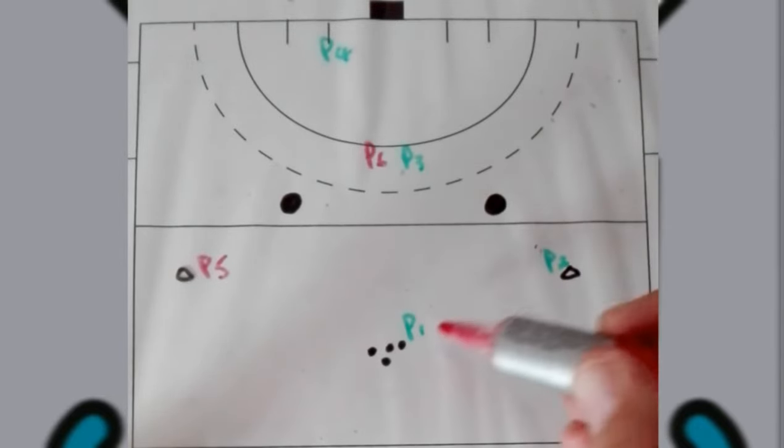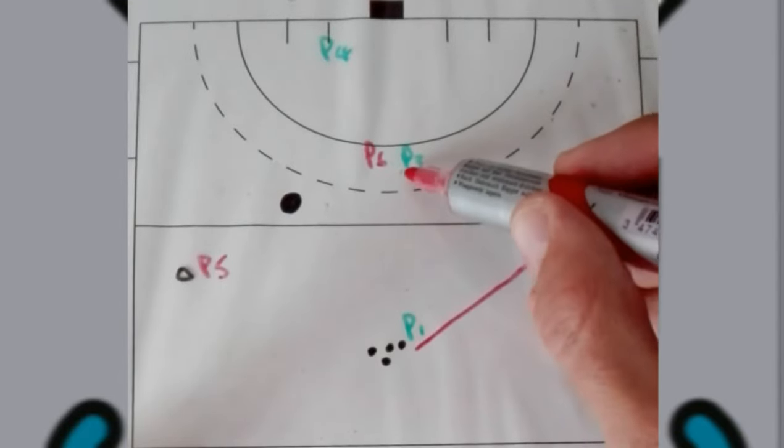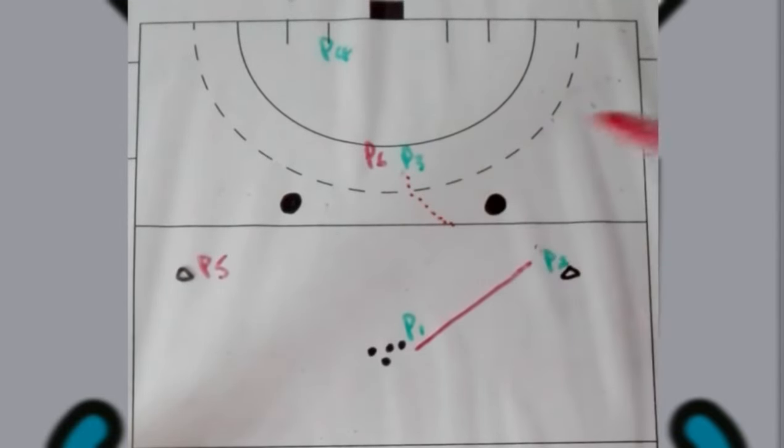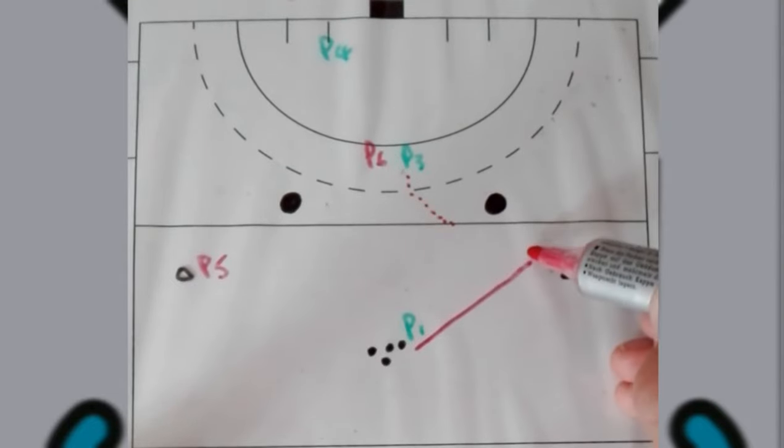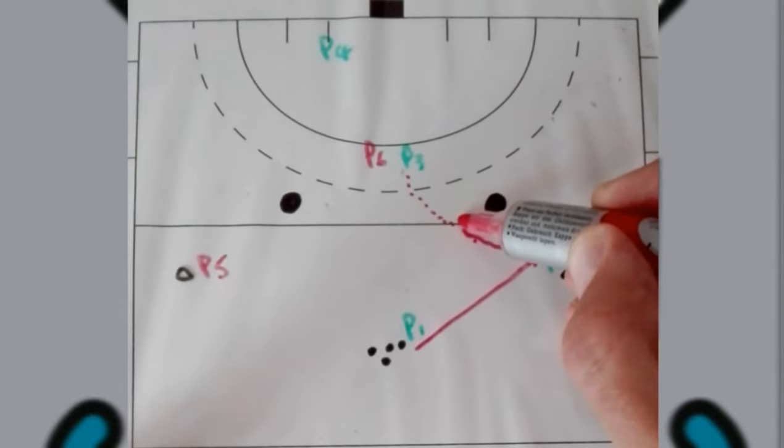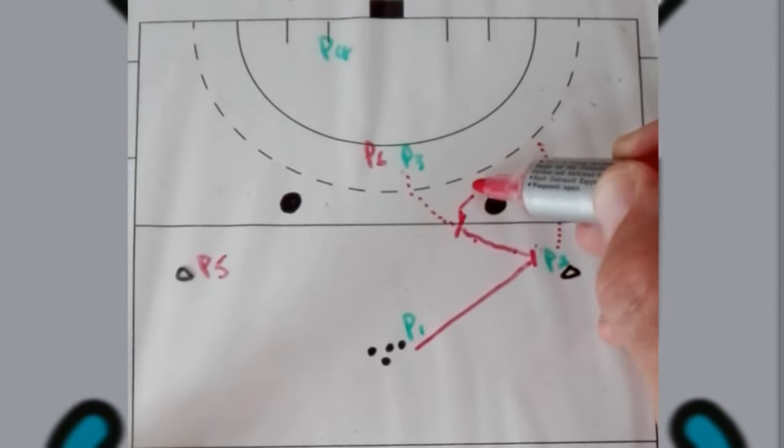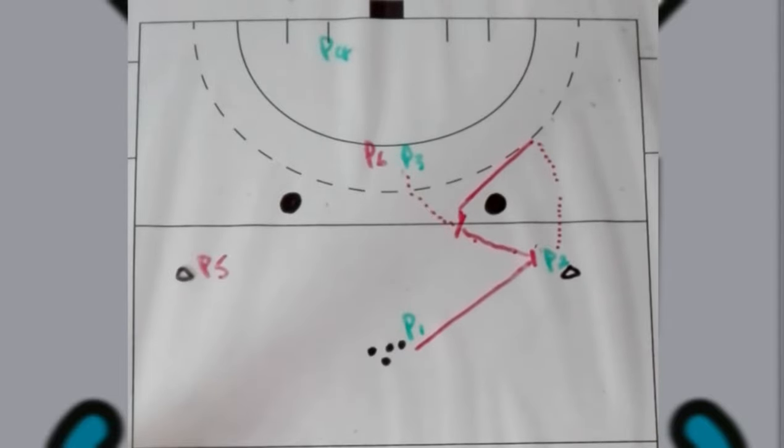But how it will work is player one will pass to player two. As soon as that pass happens player three will make a lead towards. Player two will receive the ball, pass it to player three. They will then start making the lead into this space. Player three will receive and then make a pass back to player number two.